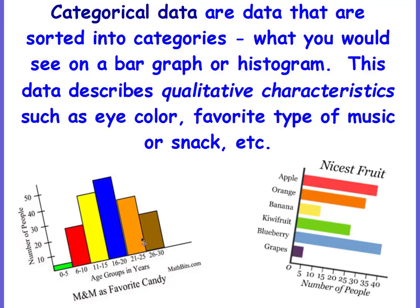Look down at the examples — you'll see a histogram talking about the ages of people who chose M&M as their favorite candy. This particular one on the right is a bar graph talking about the number of people and their favorite fruits.